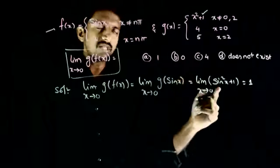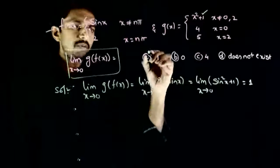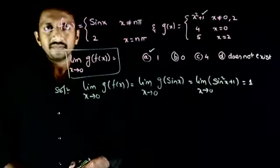Substituting, sin²(0) equals 0, plus 1 equals 1. So option A is the right answer. Thank you.